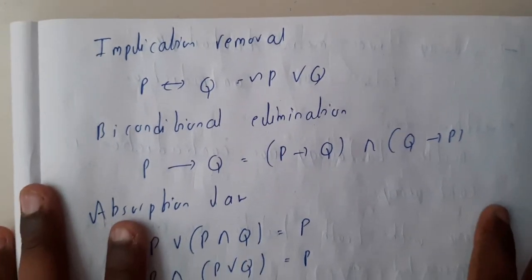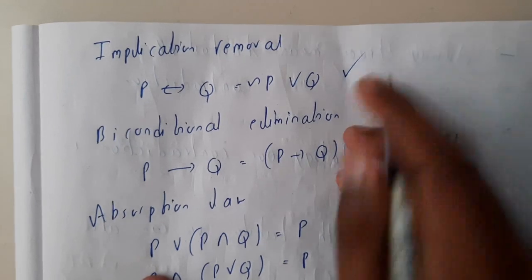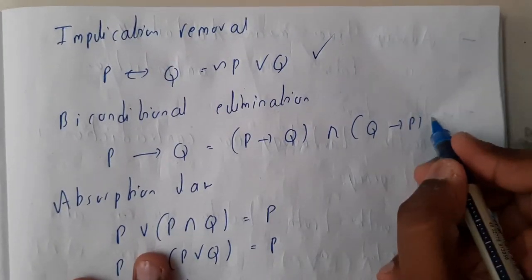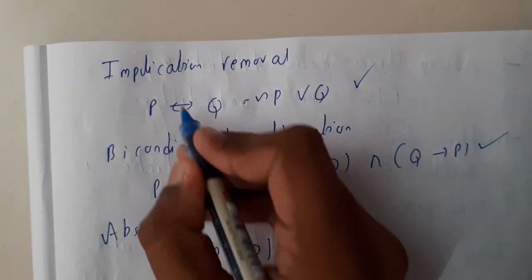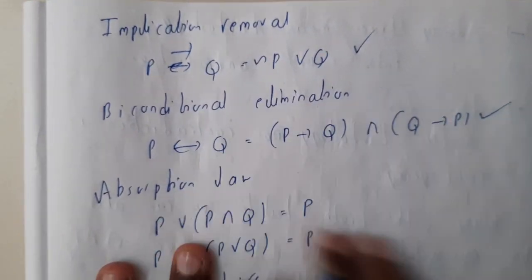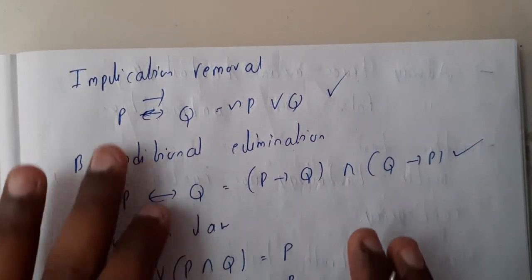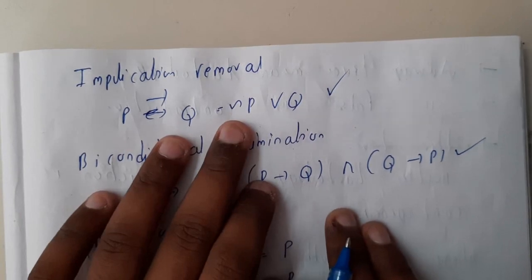So let us continue. Remember these things also. The double implication, and I think I have written it wrong. Sorry, this is single implication, this is double implication, perfect.